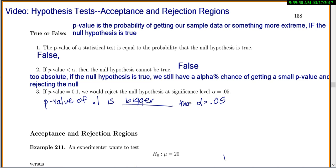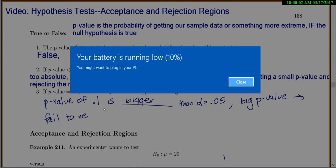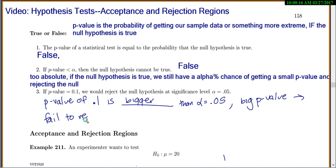And anytime you have a big p-value, you will remember that you will fail to reject the null hypothesis. So that means this one is also false because it said reject, but we should have failed to reject.